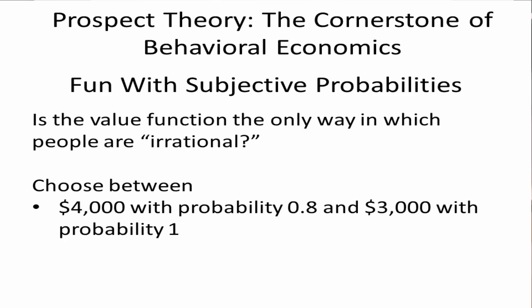Here's another choice. You can either have $4,000 with probability 0.8. Of course, the implied thing here is that then you get zero with probability 0.2, in case that wasn't clear. Or you can have $3,000 for sure.